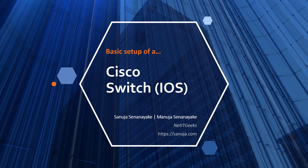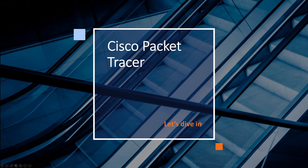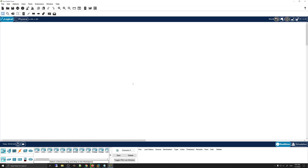In this demonstration I will show you a basic setup of a Cisco switch. We will look at the basic setup using the IOS, configure password security, and configure Telnet and line VTY. I'll be using Cisco Packet Tracer with a Cisco switch, though the same commands can be used on any Cisco device running IOS, such as routers.